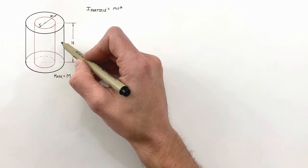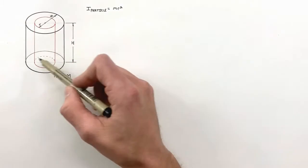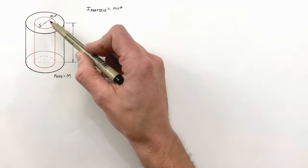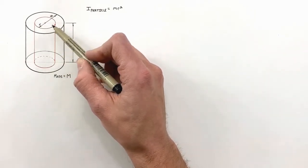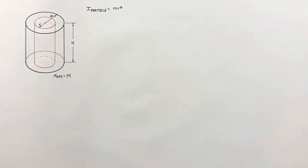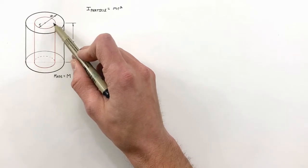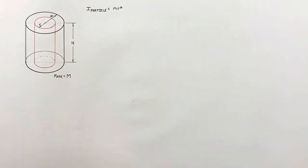So to determine the total rotational moment of inertia of the entire cylinder, first we're going to need to look at the moment of inertia of this inner cylinder, which is all at a single radius. In order to determine the inertia of that cylinder, we're first going to need to determine its mass. And to get to its mass, we're first going to need to determine the volume of this cylinder.